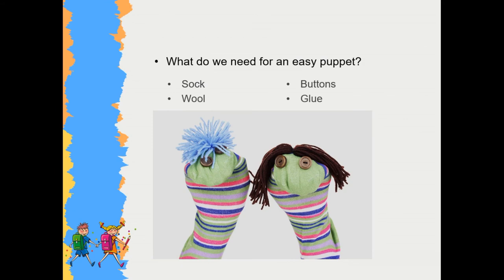Before we finish, let me show you how to make an easy puppet. To do that, we need sock, buttons, wool, and glue. As you can imagine, it is a sock puppet. We use buttons as the eyes of the puppet. Lastly, we need hair and we can use wool for that. Then our puppet is ready to use.